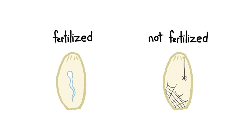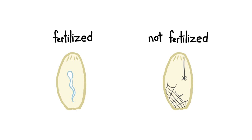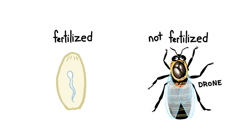In honeybees, sex is determined by the fertilization or non-fertilization of eggs, rather than the presence of sex chromosomes. If no sperm is released, the unfertilized egg will become a male, or drone. This is called a haploid egg because it only has one set of chromosomes.